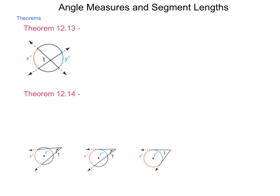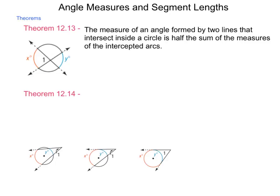So theorem 12.13 talks about angles that cross inside, but not through the center, not inscribed angles. This one tells us the measure of an angle formed by two lines that intersect inside a circle is half the sum of the measures of the intercepted arcs. So what that means is with the angle 1 that is shown in the diagram here, the measure of angle 1 is going to equal one-half the sum of x and y.